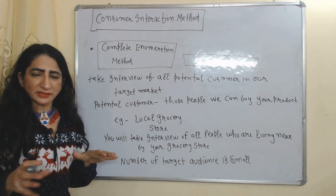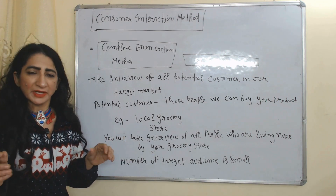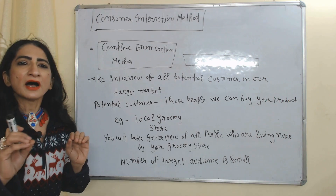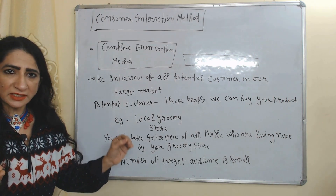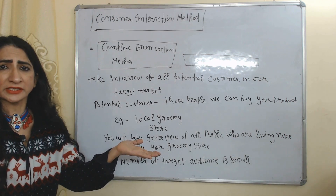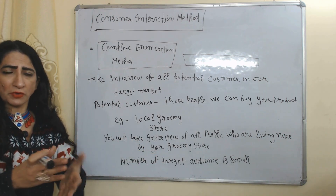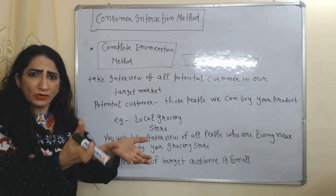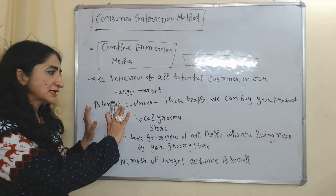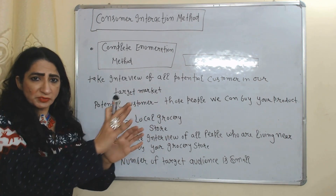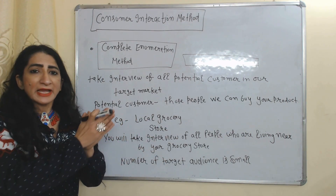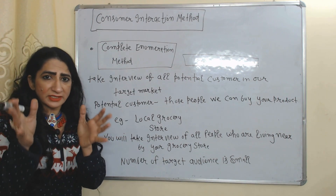Now we will see the complete enumeration method, which comes under consumer interview method. Under complete enumeration method, we take interviews of all potential customers — meaning people who can buy our product. For example, if you have a local grocery shop, people living nearby are your potential customers. You will take interviews of all of them. This method is possible only when our target audience is very small.